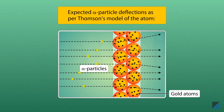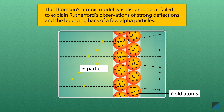These observations did not hold true to Thomson's atomic model, where it was expected that the positively charged alpha particles would pass through the weak electric field largely undeflected or slightly deflected. Thomson's atomic model was discarded since it failed to explain Rutherford's observations.